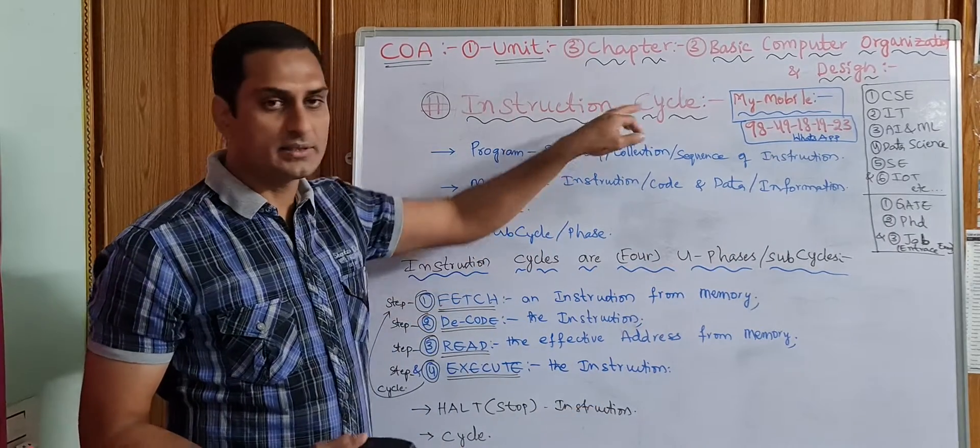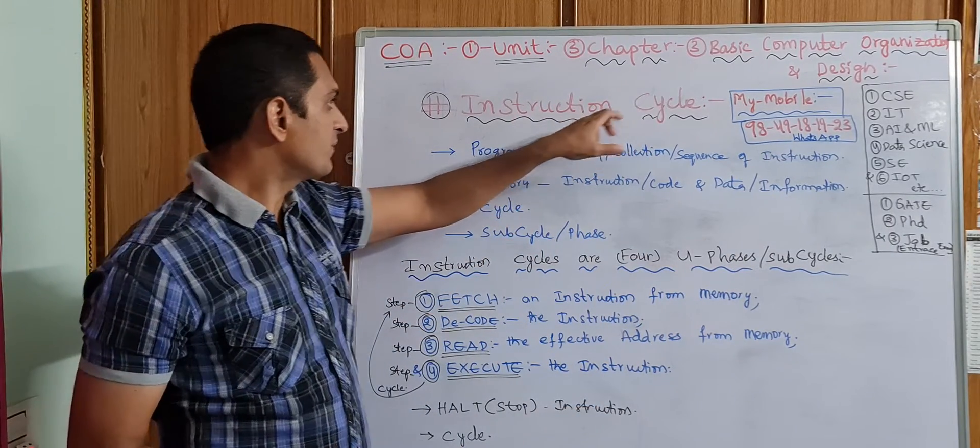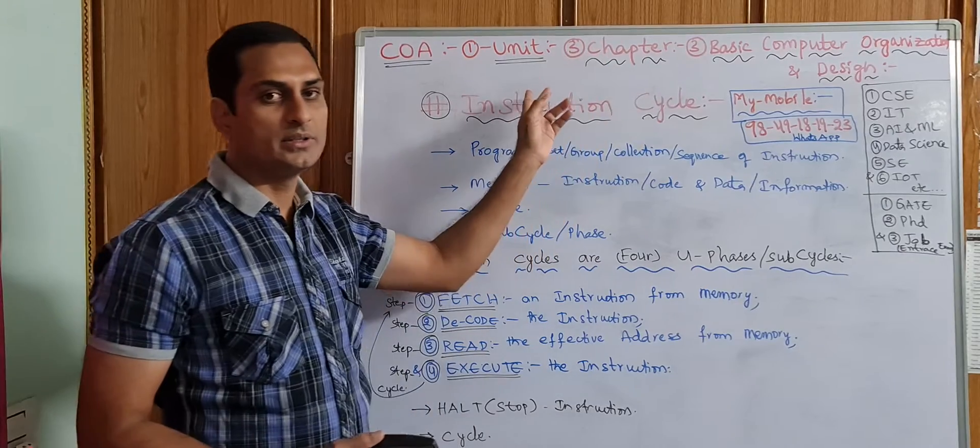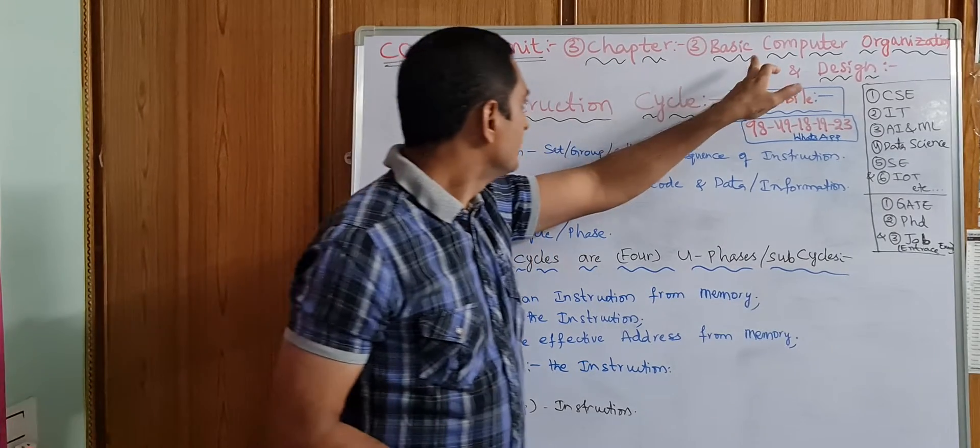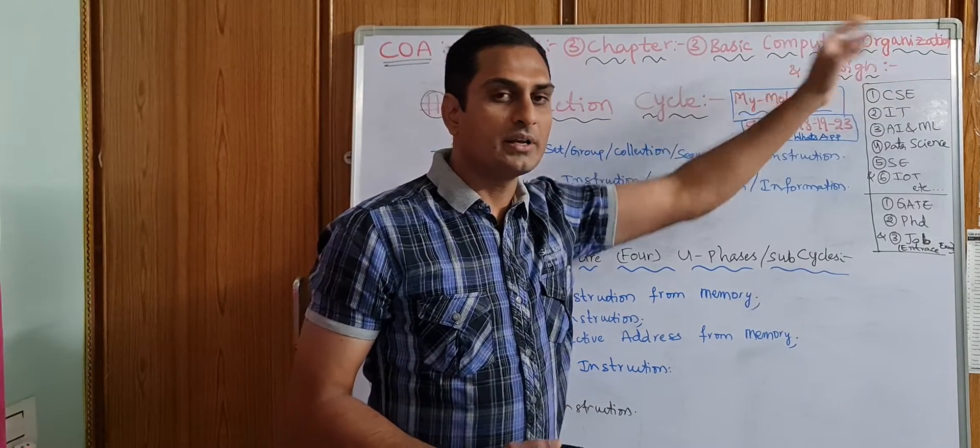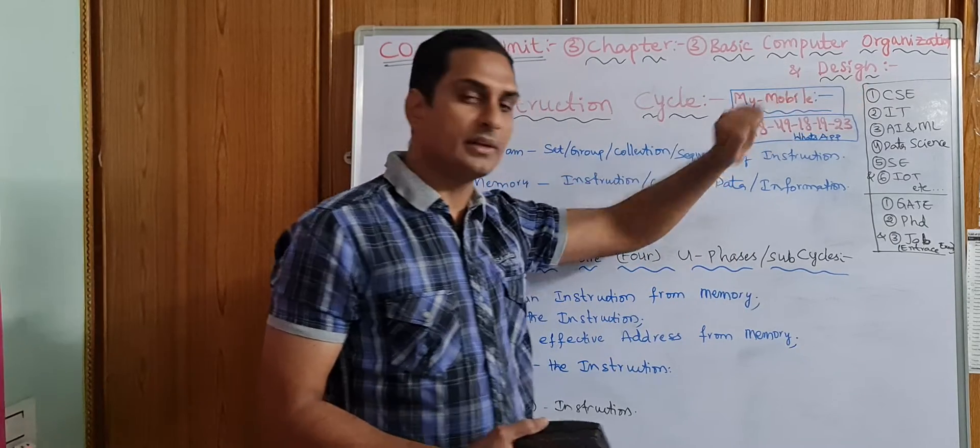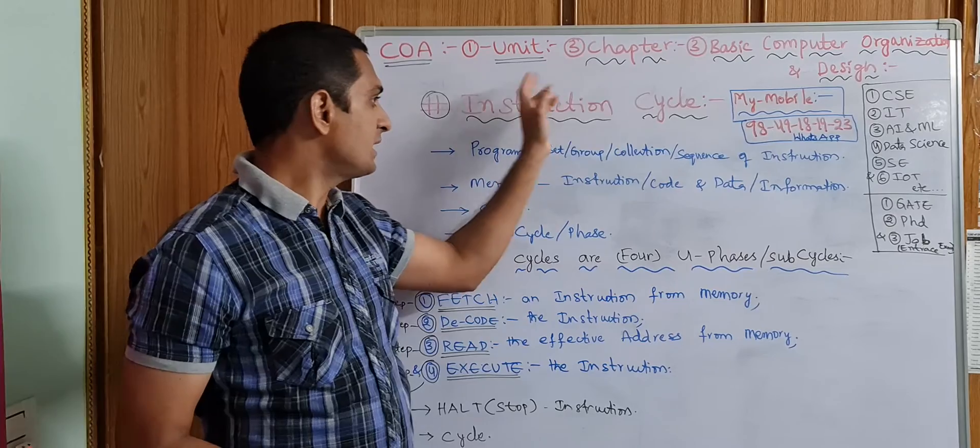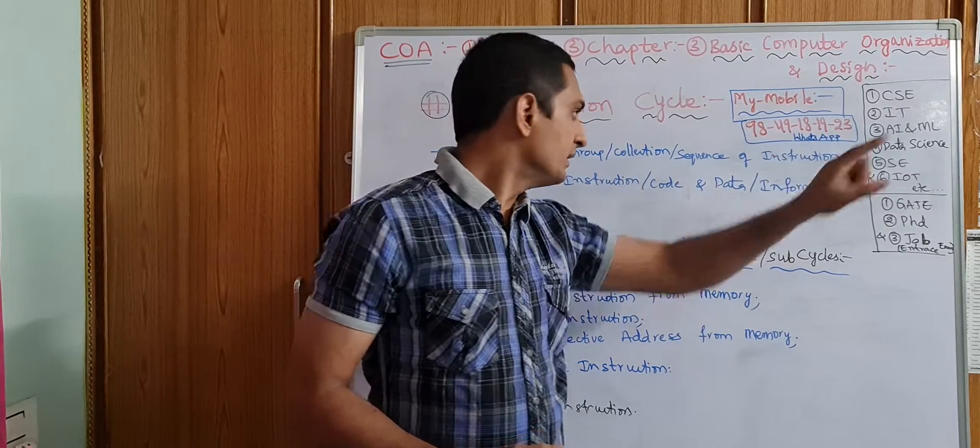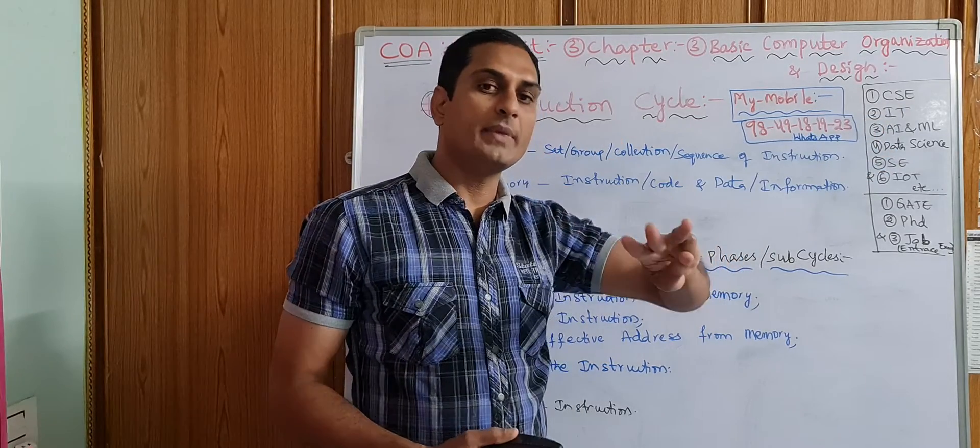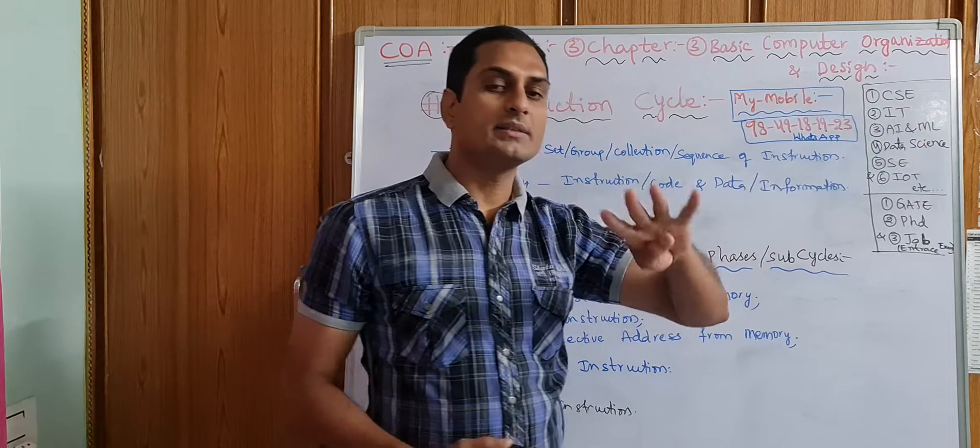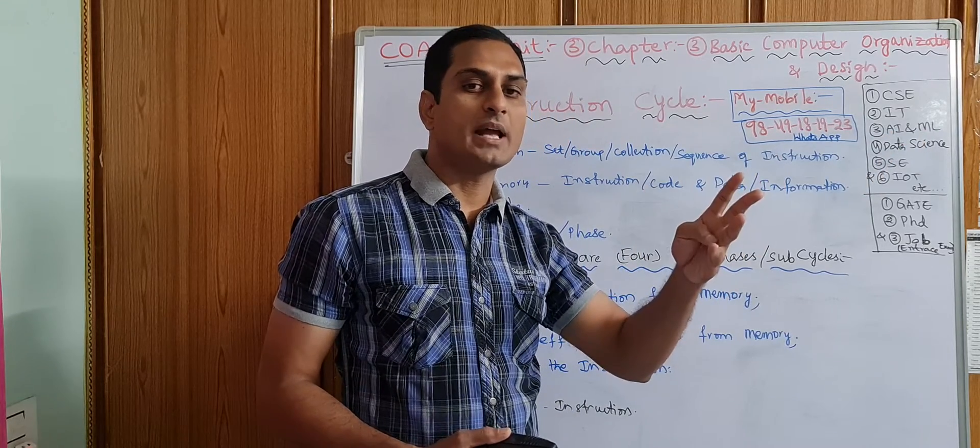Our today's topic is Instruction Cycle, from the third chapter in the first unit: basic computer organization and design. The COA subject is there for CSE group people, IT group people, AIML group people, and data science group people.